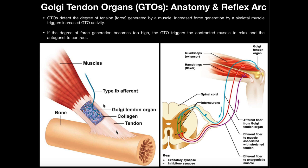The way muscles work and move the skeleton is by contracting and shortening. When this muscle contracts and shortens, it pulls the tendon in that same direction and hopefully moves the bone. As the muscle shortens and pulls the tendon, it causes these collagen fibers to be stretched a little bit. This blue neuron here is actually the axon of the Golgi tendon organ, which is a cluster of sensory receptors that detect the degree of tension generated by the muscle by measuring tension on the collagen fibers.